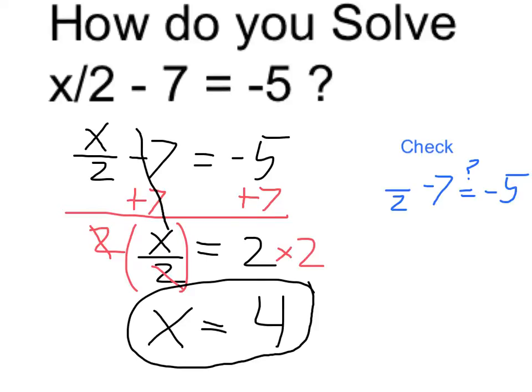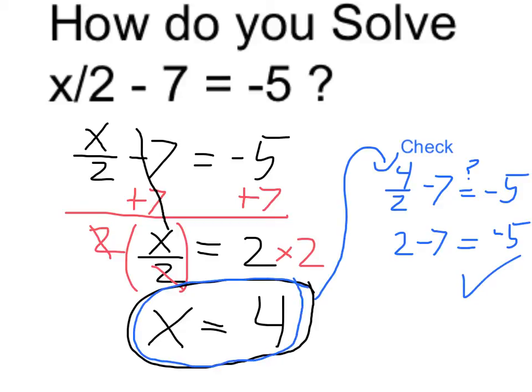And I'm going to check that. I am going to put my 4 into my original equation and see if it's true. 4 divided by 2 is 2, and 2 minus 7 does equal negative 5, so it is true. And I have verified that the correct answer, or the solution to this equation, is x equals 4. Thank you.